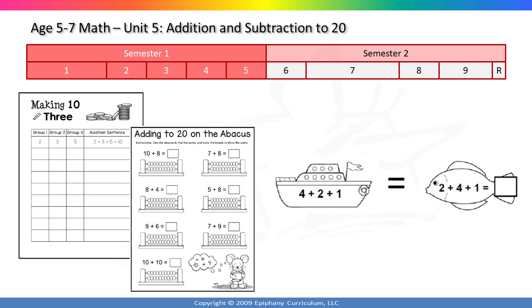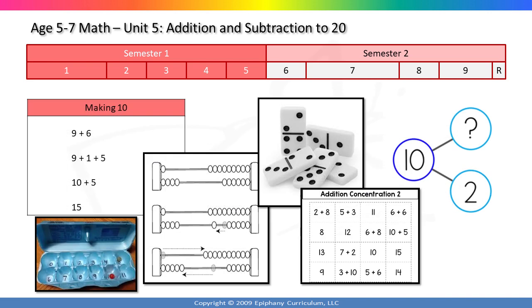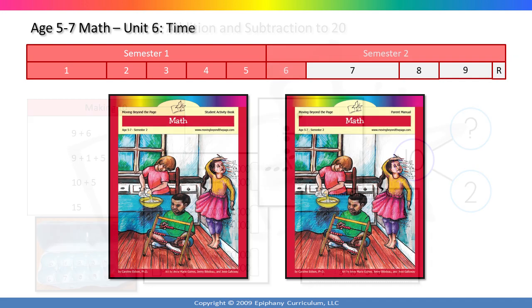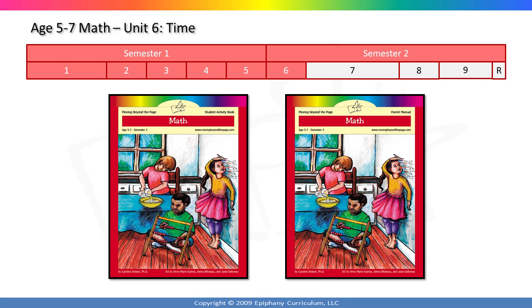With the fifth and final unit of the first semester, you and your child will return to the important skills of addition and subtraction, this time through 20. After a short review, your child will learn how to add three numbers together, rearrange numbers using the associative property, and add to 20 on the abacus. The remainder of this unit will introduce a number of different strategies, tools, and games that will help with memorization, problem solving, and mental addition and subtraction. Now it is time to put away the semester one books and find the parent manual and activity book for semester two.